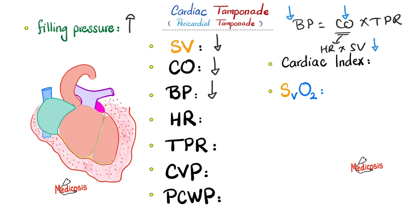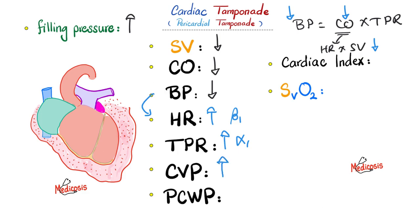This is a state of shock. The baroreceptor reflex will try to increase heart rate by stimulating beta-1 sympathetic receptors and increase total peripheral resistance by stimulating alpha-1 sympathetic receptors — trying to raise heart rate and TPR to bring blood pressure back to normal. Since we have fluid around the heart, the right and left ventricles could not relax, so blood piles up into the right and left atria, giving elevated central venous pressure and pulmonary capillary wedge pressure respectively.